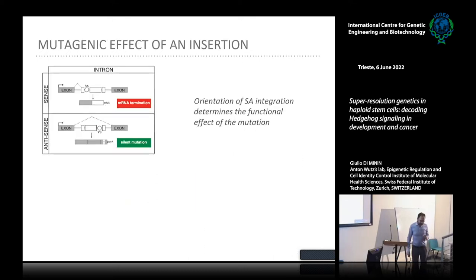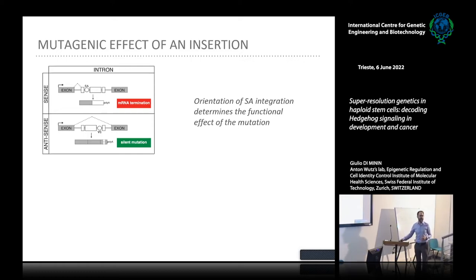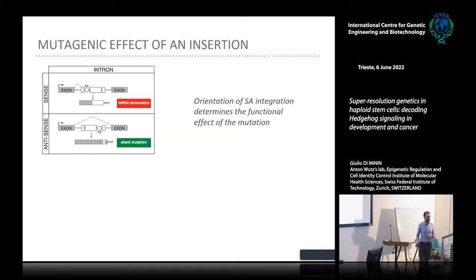The biological effect of a mutation depends on the orientation of our gene trap cassette. If the integration occurs in the sense orientation with respect to gene transcription, this leads to a functional knockout, because during splicing the splice acceptor is recognized and an alternative transcript variant is formed. If instead the integration occurs in the antisense orientation, we are talking about a silent mutation, because during splicing our gene trap cassette is simply skipped.